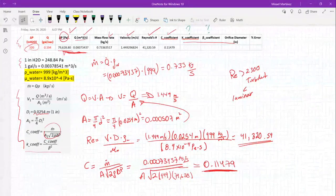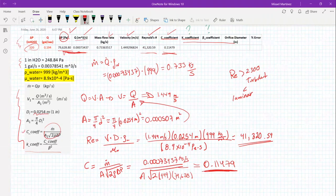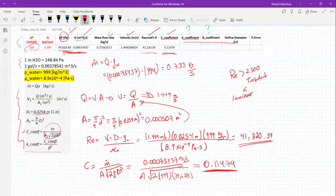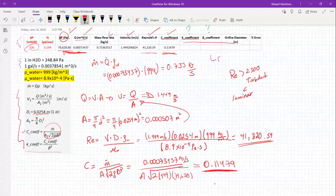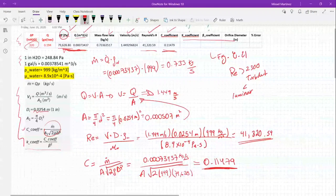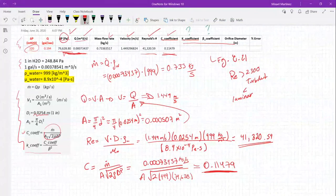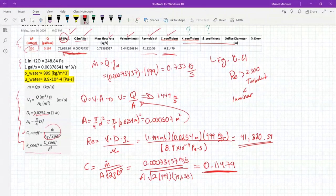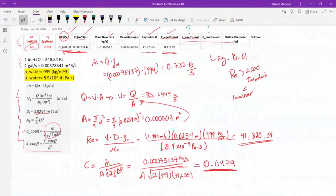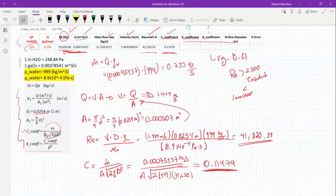Once you have the Reynolds number and your c-coefficient, the c-coefficient you can see is just using the equation over here. These are the numbers that we're going to use to find our k and our beta coefficient from figure 8.21, which will be available for you. Take note that our Reynolds number is right now 41,000 and our c-coefficient is 0.11479. Your numbers might be slightly different based on your rounding, but you should have pretty similar numbers.